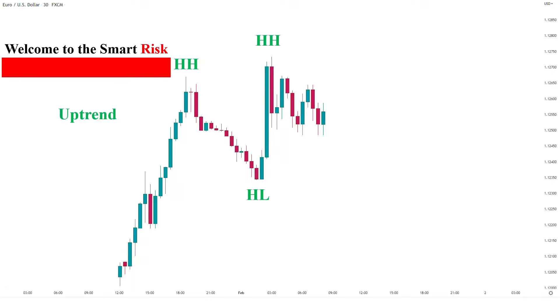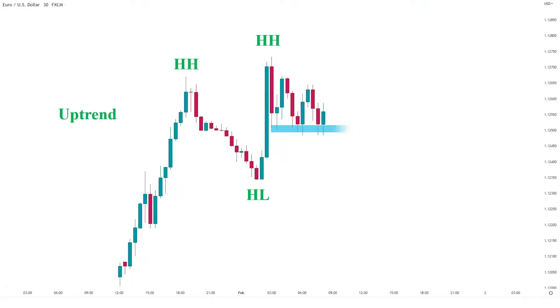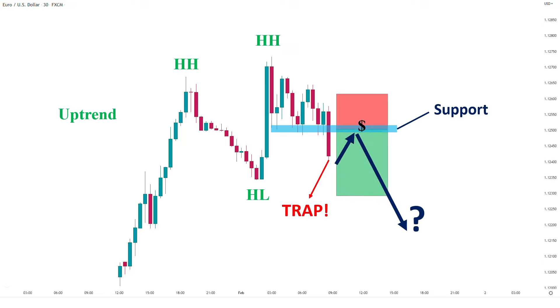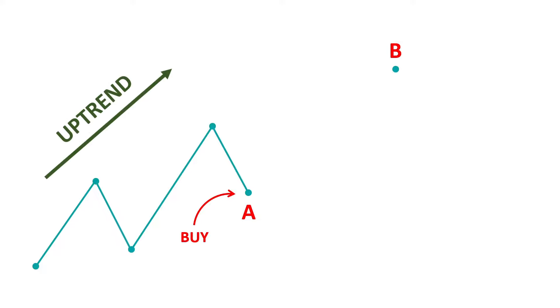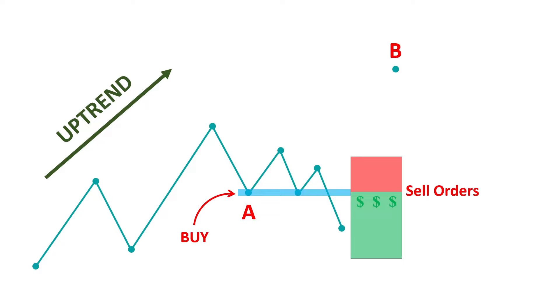Market makers try to deceive traders to enter the market in the wrong direction to increase their profit by grabbing the liquidity they need before making their moves. Imagine we are in an uptrend and market makers want to push the market from point A to point B. They want to buy a large number of shares, but nobody wants to sell because everyone can see we are in an uptrend. So they deceive traders and make them sellers with a simple trick, then buy it all and continue their move to the upside.